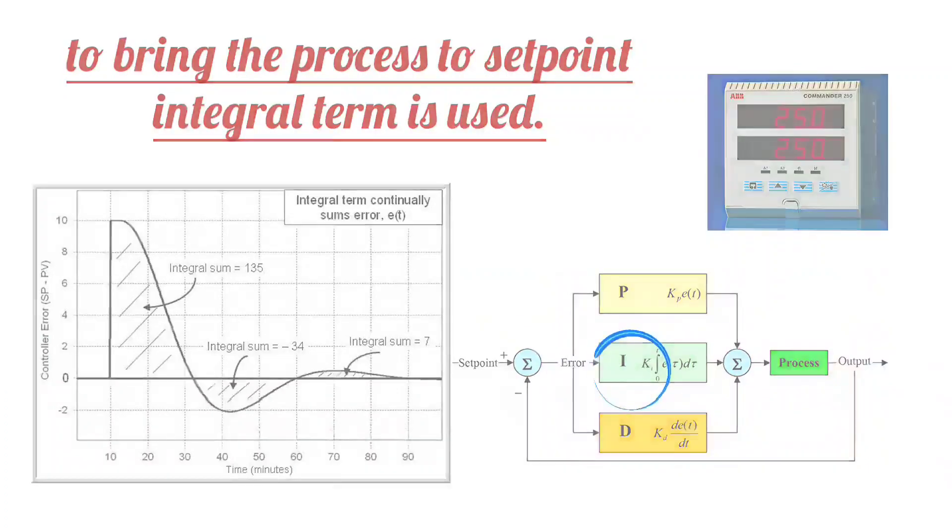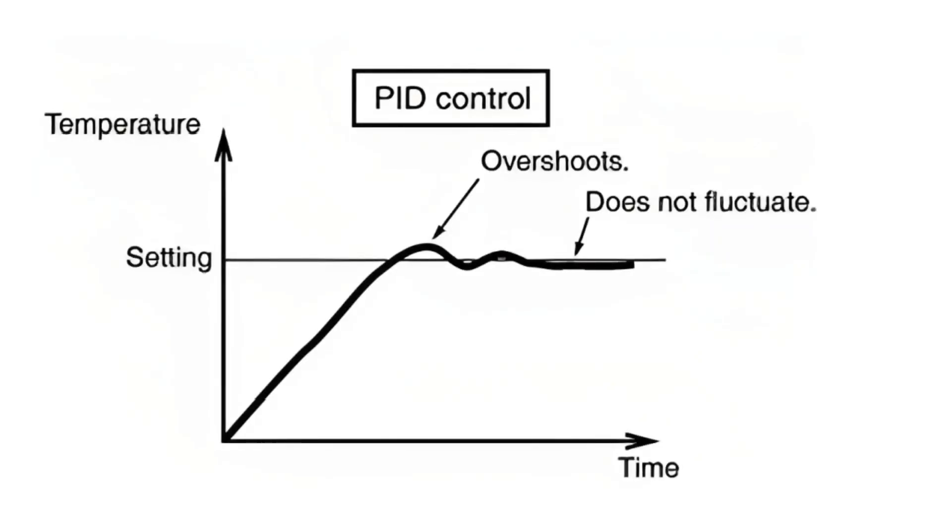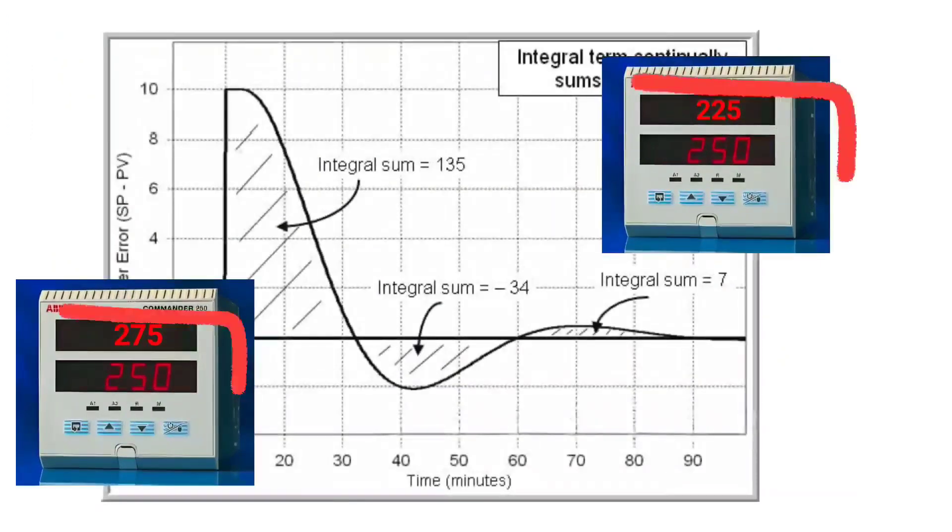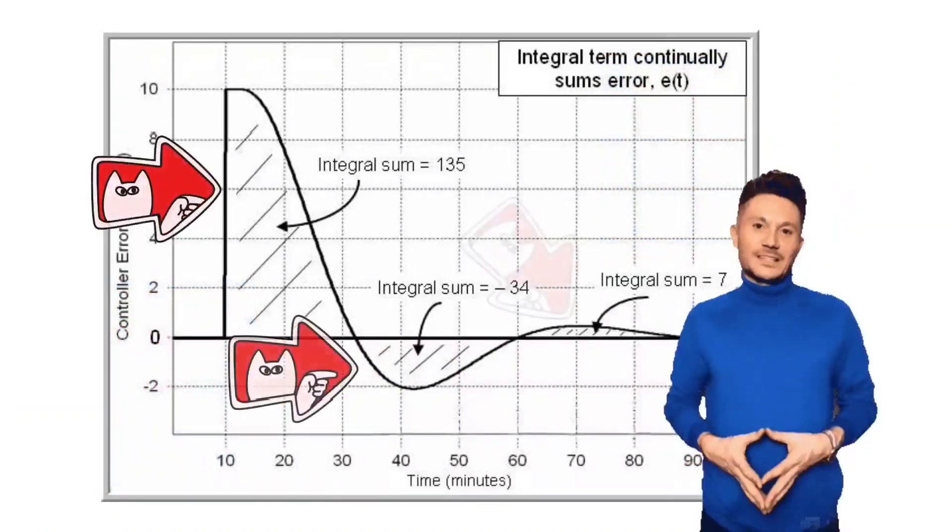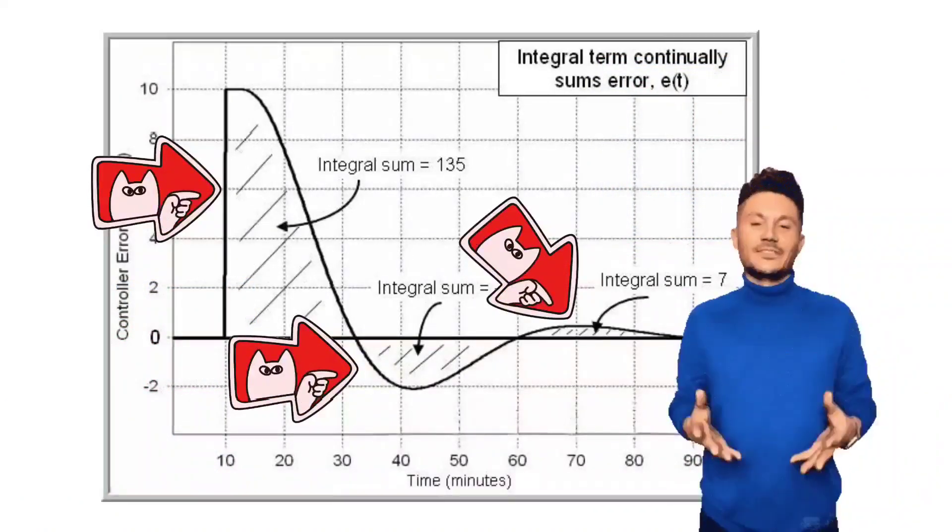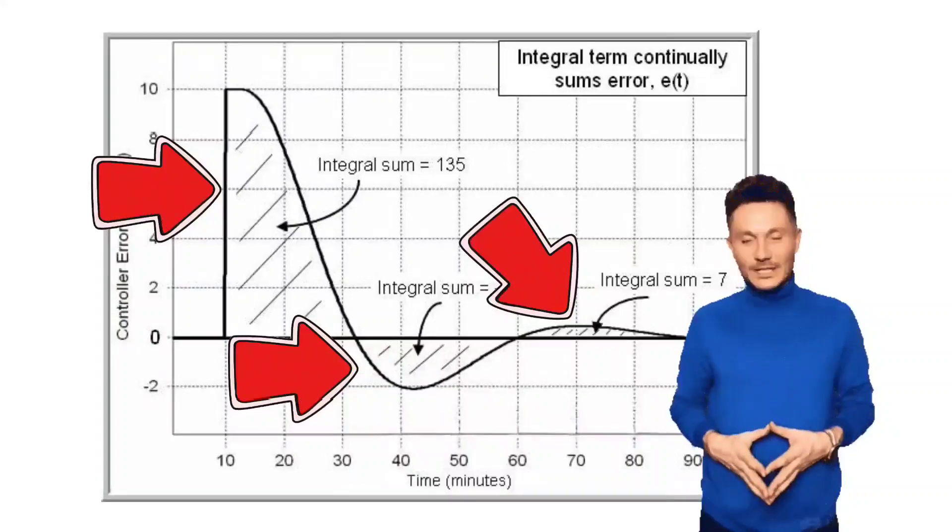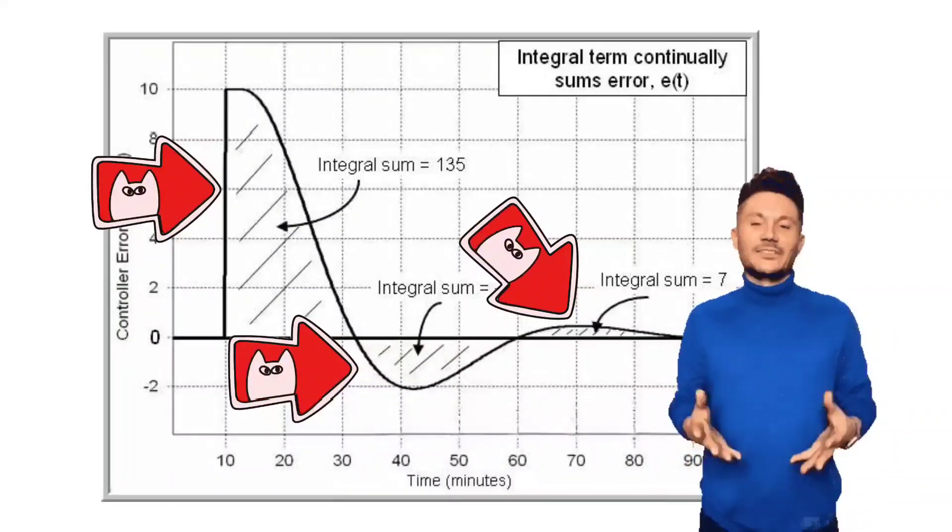Integral control helps reduce steady state error in the PID controller. Whenever the process variable deviates from the set point, the integral term looks at the total sum of past errors and adjusts the control output accordingly.